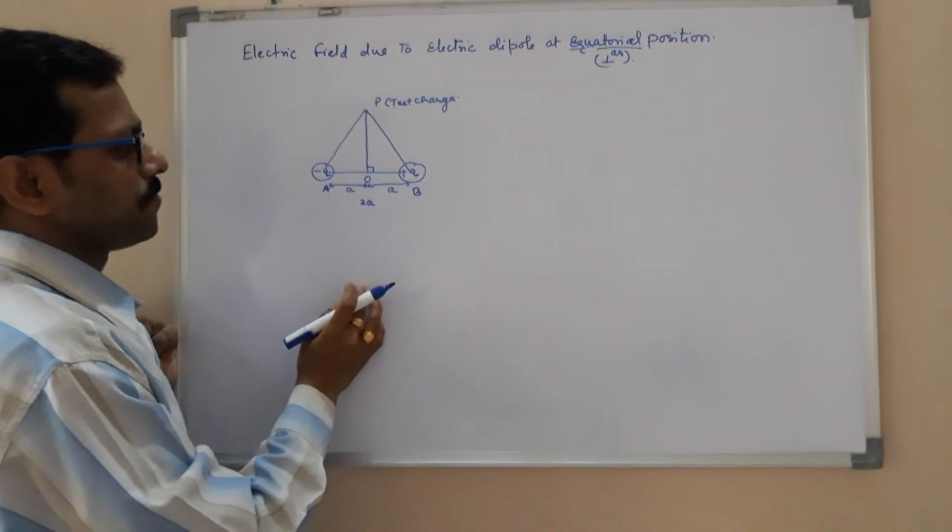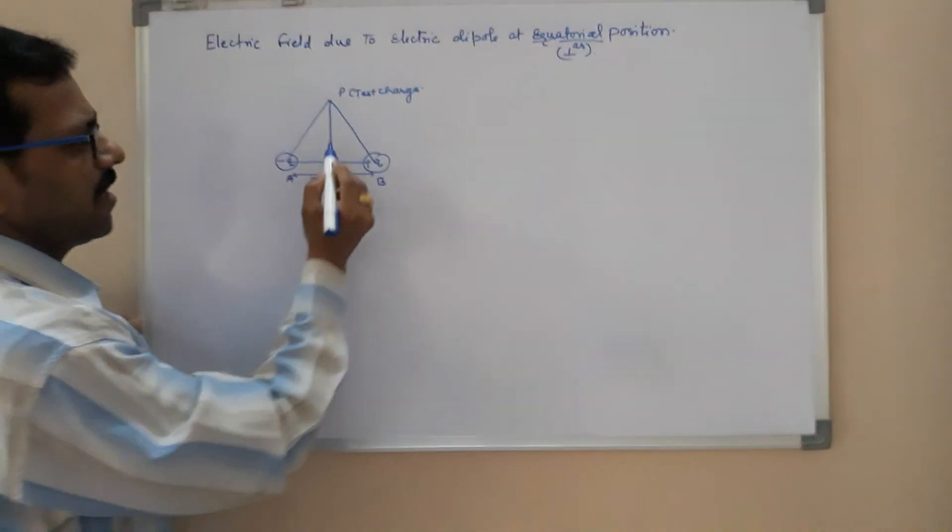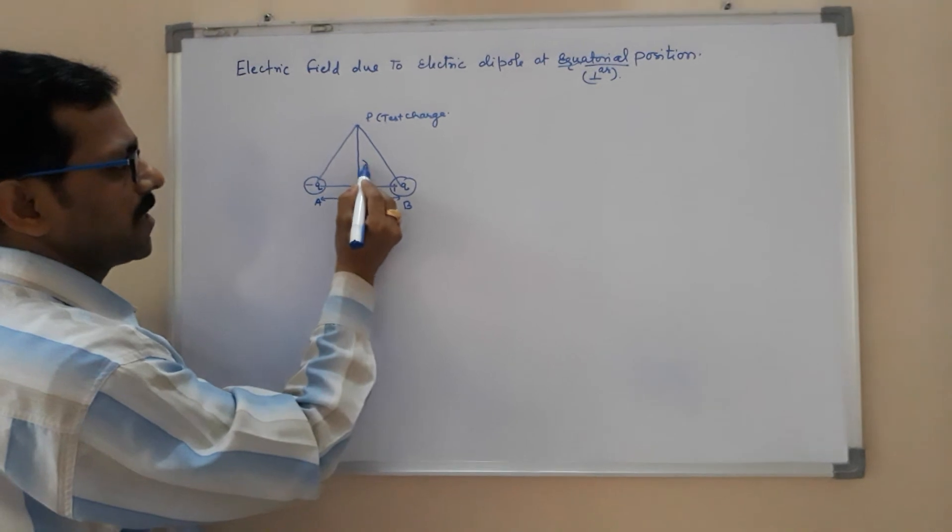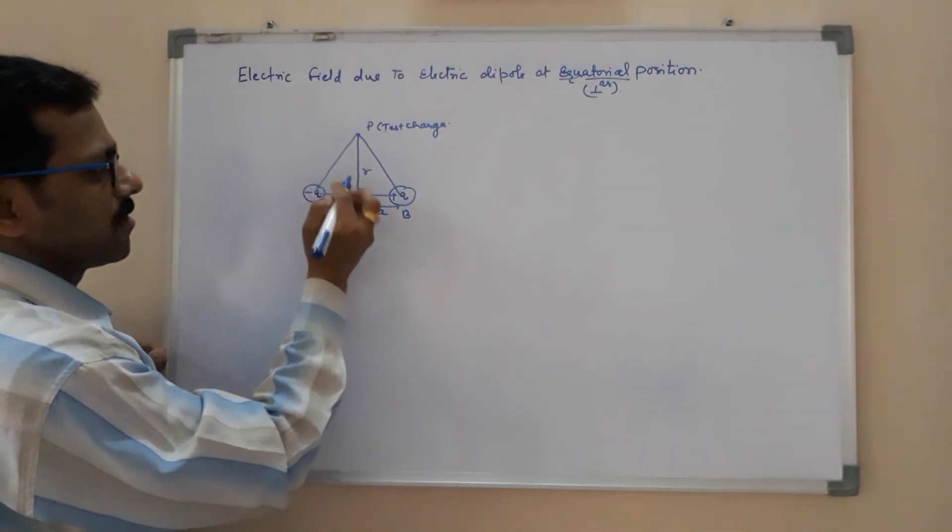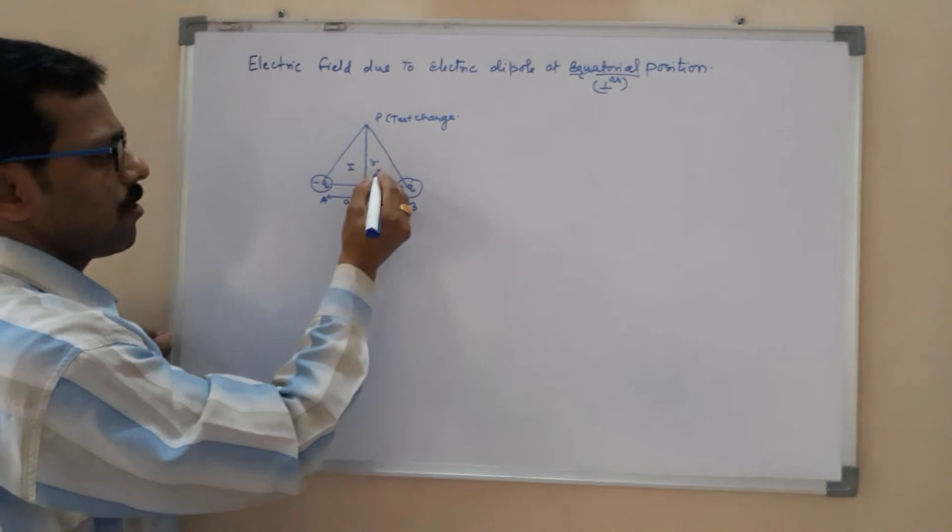You will get one triangle. This is A, and how far is P from O? Let it be R. Now use the Pythagoras theorem in triangle 1 or in 2, you will get AP.